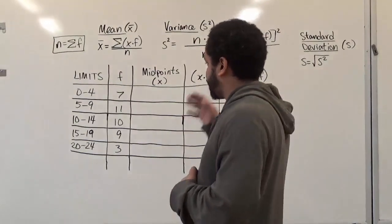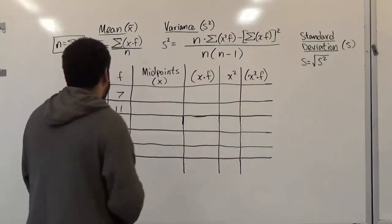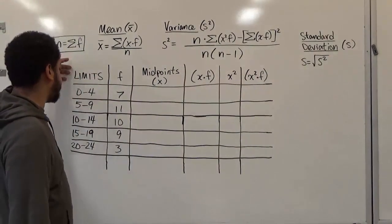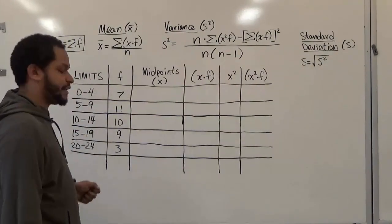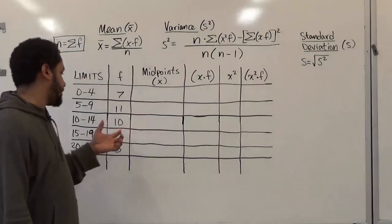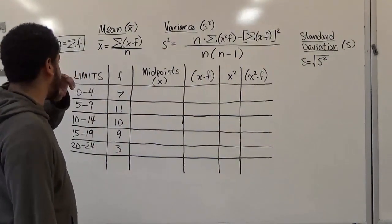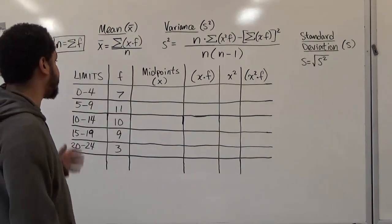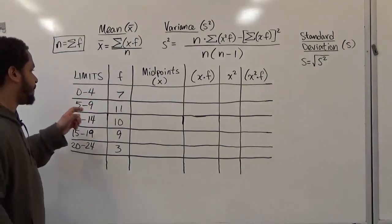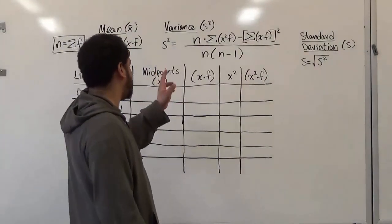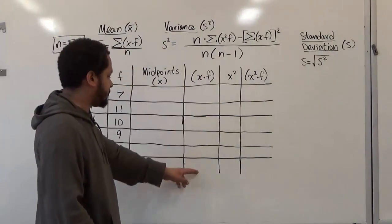Here we're given a frequency distribution that has class limits and frequencies. With just limits and frequencies — these could be annual salaries, age ranges, or anything where we have a frequency of a population fitting into certain categories. To calculate mean, variance, and standard deviation, we're going to need the midpoint of every class limit data set, and also the product of the midpoint and the frequency.